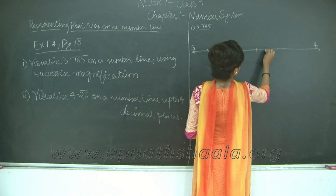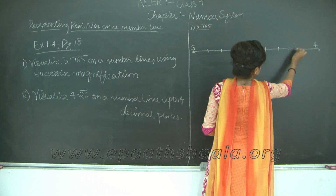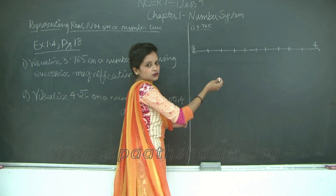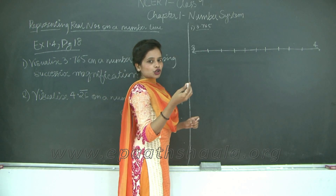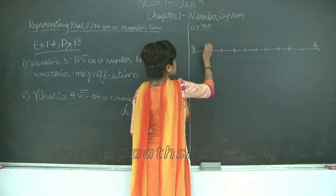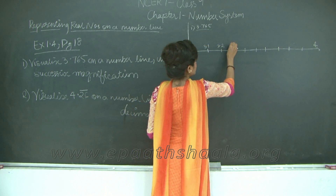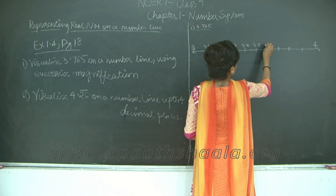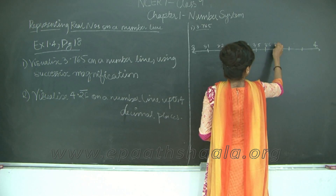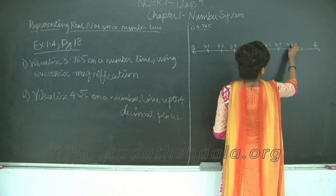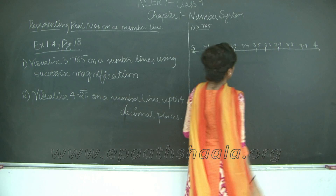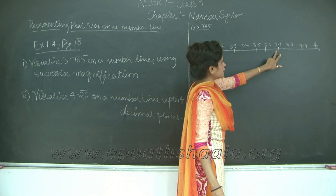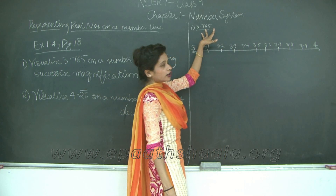I divide the interval between 3 and 4 into 10 equal parts, so each distance increases by a difference of 0.1. So this gives us 3.1, 3.2, 3.3, 3.4, 3.5, 3.6, 3.7, 3.8, 3.9, and finally 4. The term we want after the decimal is 7, which is 3.7, but I need to further plot 6 and 5 as well.